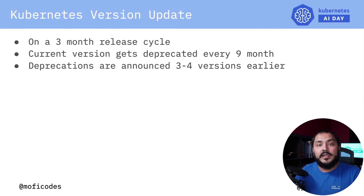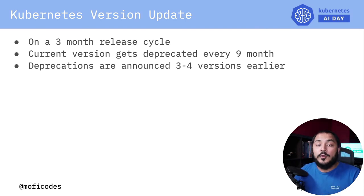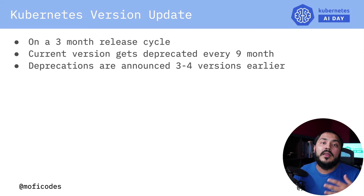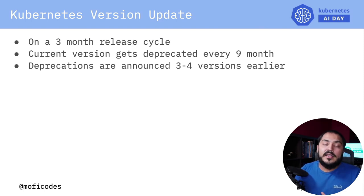Kubeflow runs on top of Kubernetes, so you have to adhere to the Kubernetes update policies as well. Kubernetes is on an approximately three-month release cycle and the current version gets deprecated in about nine months. Deprecations in Kubernetes are announced about three to four versions in advance. So if Kubernetes is deprecating v1alpha1 and changing it to v1 or dropping some APIs, you will have about three to four versions — roughly a year — before those versions go away.